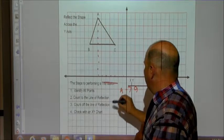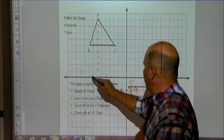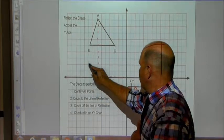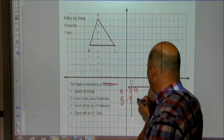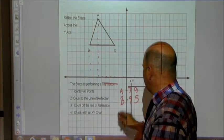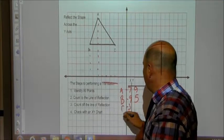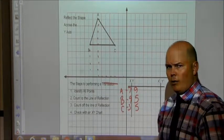Point B is going to be at negative 9... 1, 2, 3, 4, 5... 5. And point C is at negative 3, 5. Okay, so I've identified all my points.